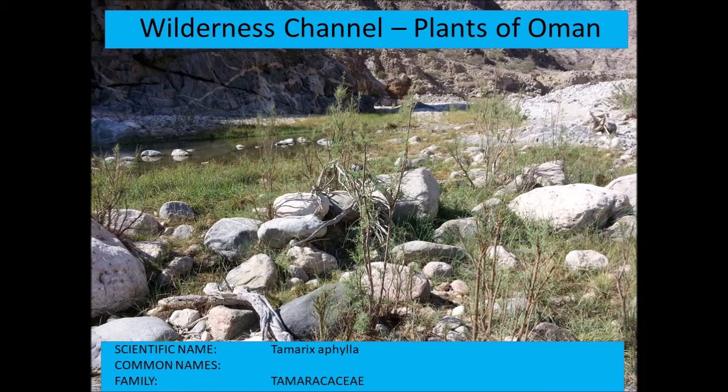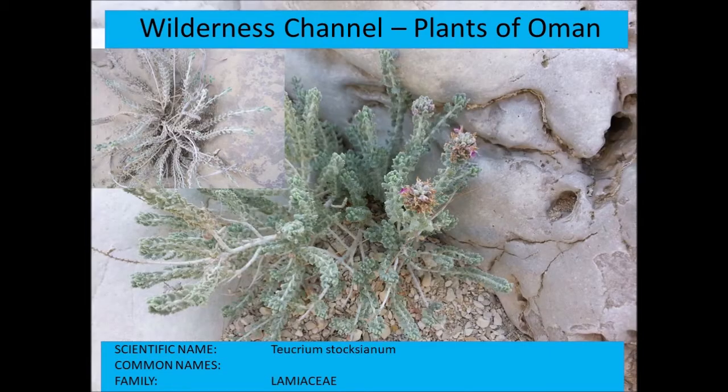This was taken in one of the wadis very close to Hasik. This is Teucrium stocksianum — it has really interesting stems, almost octopus-like, with very closely clustered succulent leaves. The clustering helps reduce water loss.